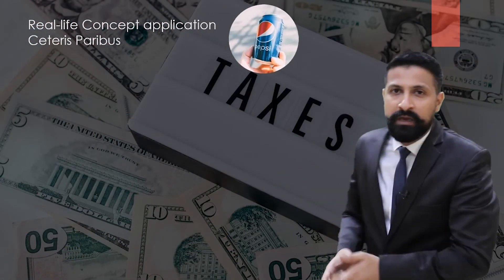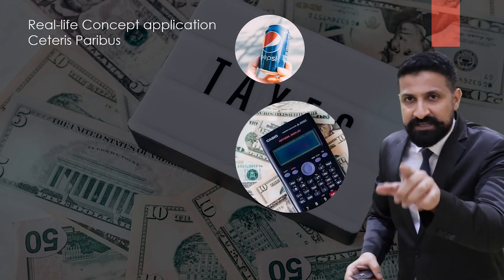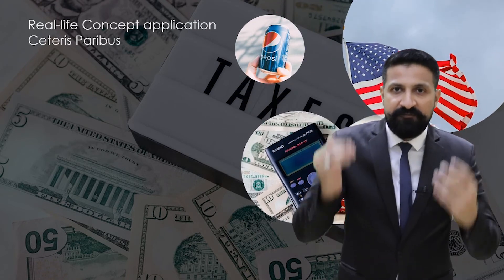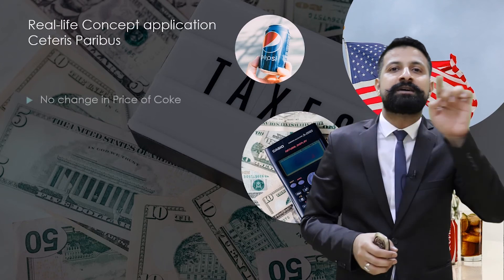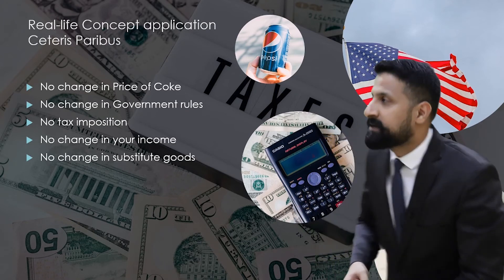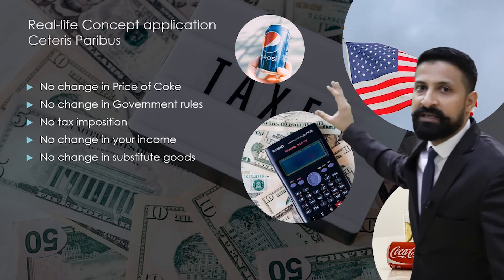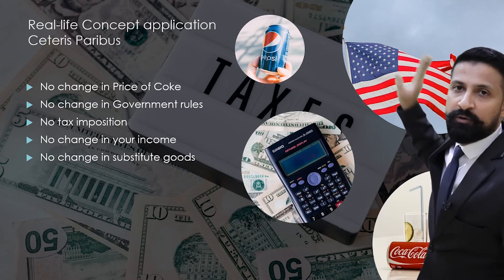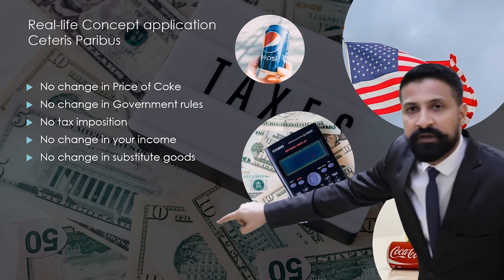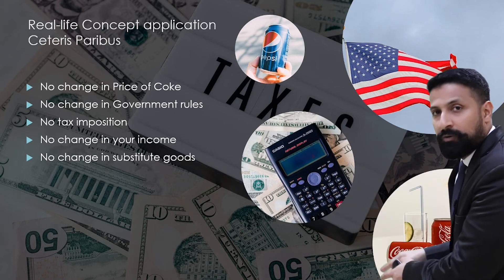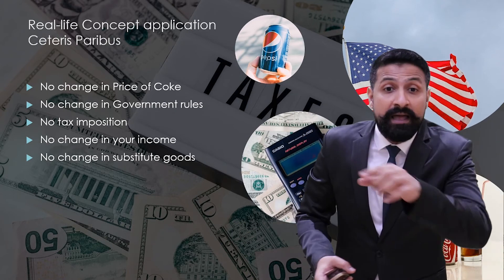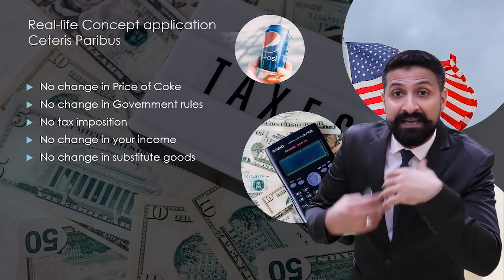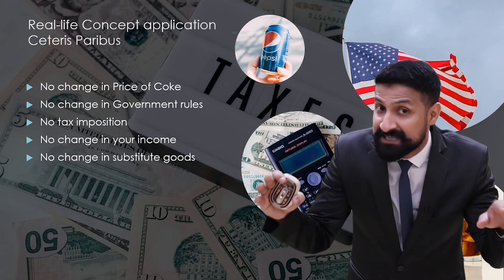Let's discuss another example. The price of Pepsi fluctuated and it has a direct impact on the quantity demanded, but all other variables are constant: government rules and regulations are constant, income of the consumer is constant, and Coca-Cola's pricing is constant.